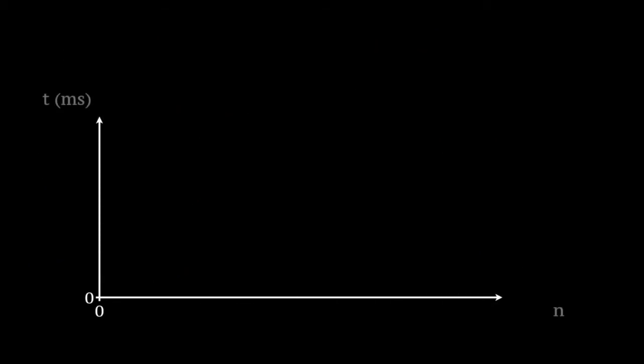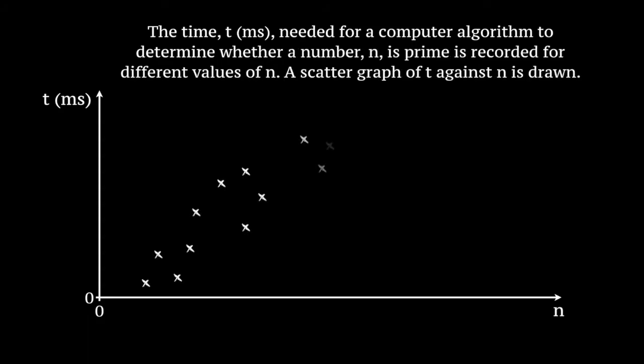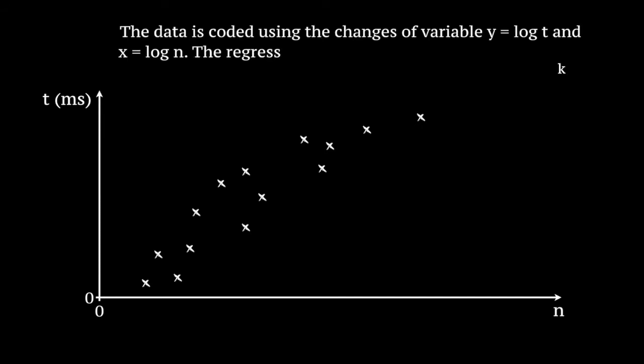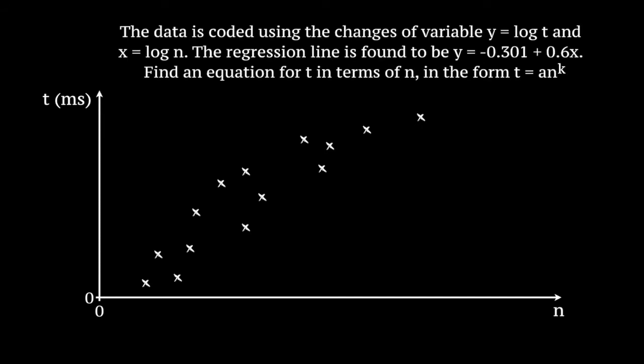We'll now go through an example to demonstrate the use of linear regression for nonlinear data. The time t in milliseconds needed for a computer algorithm to determine whether a number n is prime is recorded for different values of n. A scatter graph of t against n is drawn. We can tell from the graph that the relationship between t and n is not linear, which tells us that this problem will involve coding. The data is coded using the changes of variable y equals log t and x equals log n. The regression line is found to be y equals minus 0.301 plus 0.6x. Find an equation of t in terms of n in the form t equals a times n to the k.